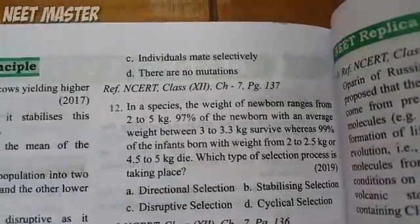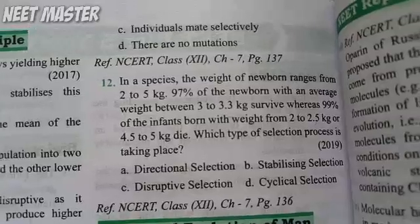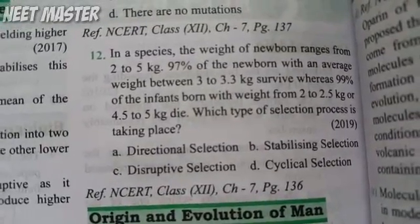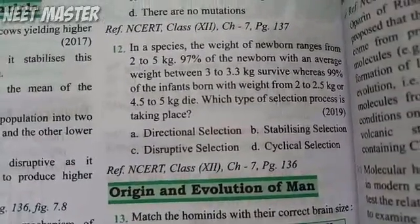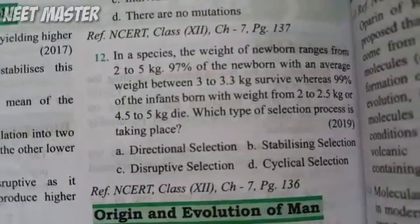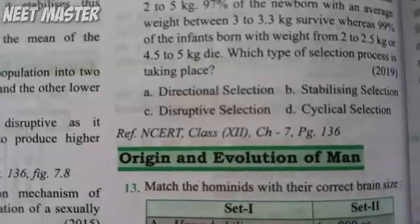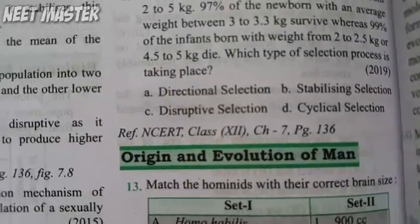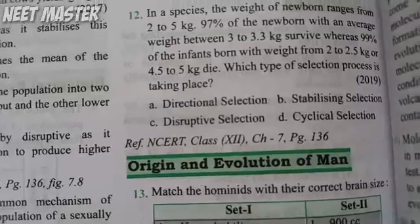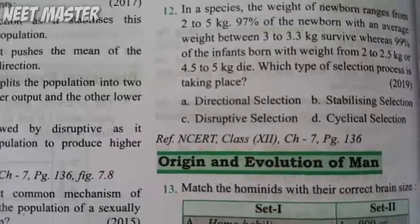Infants of 2–2.5 kg and 4.5–5 kg die; those around 3–3.3 kg are surviving. The extremes are being removed and the average is surviving. This is stabilizing selection — it favors the peak average weight.